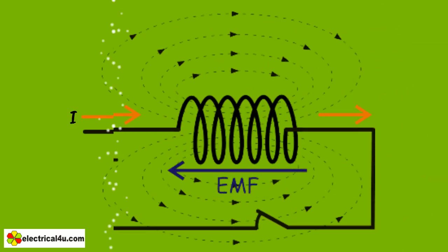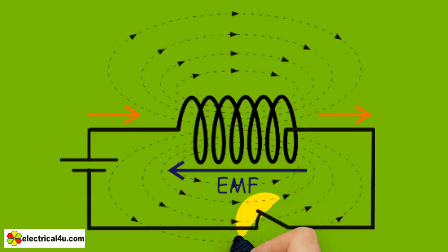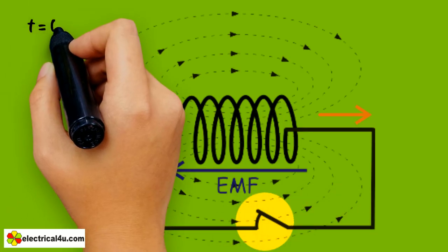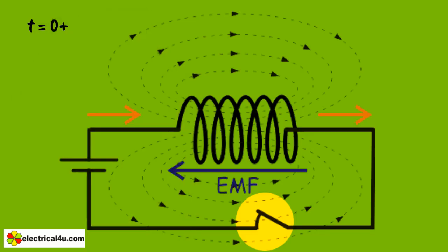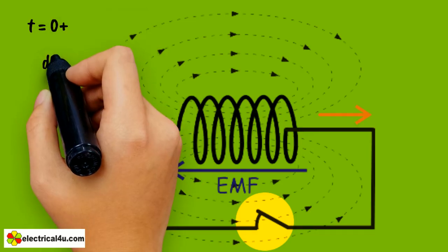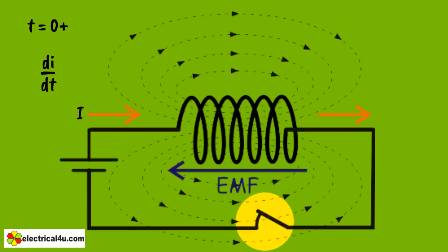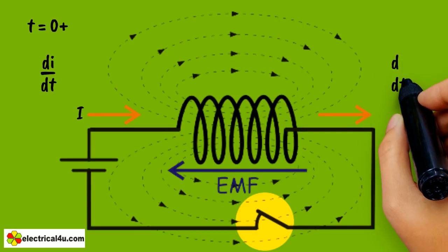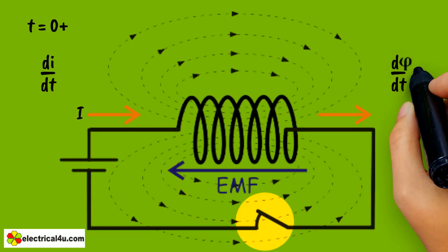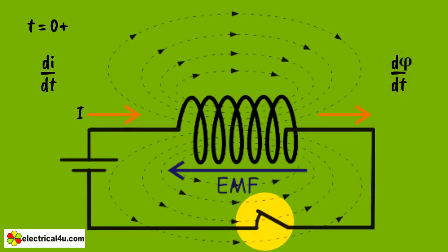For the DC source, when the switch is ON, just at T equals 0+, a current will flow from its zero value to a certain value. With respect to time, there will be a rate of change in current momentarily. This current produces magnetic field lines phi through this coil. As current changes its value from zero to a certain value, magnetic flux phi gets rate of change with respect to time, that is d phi dt.